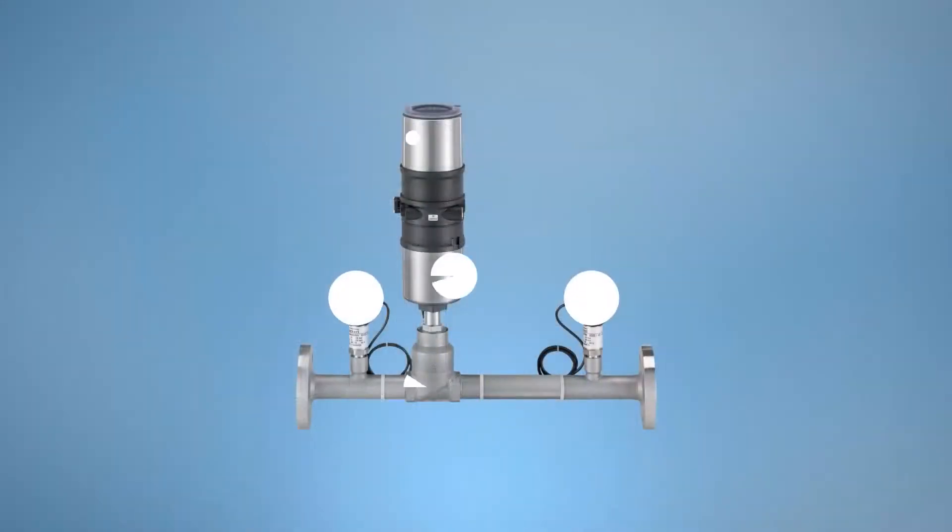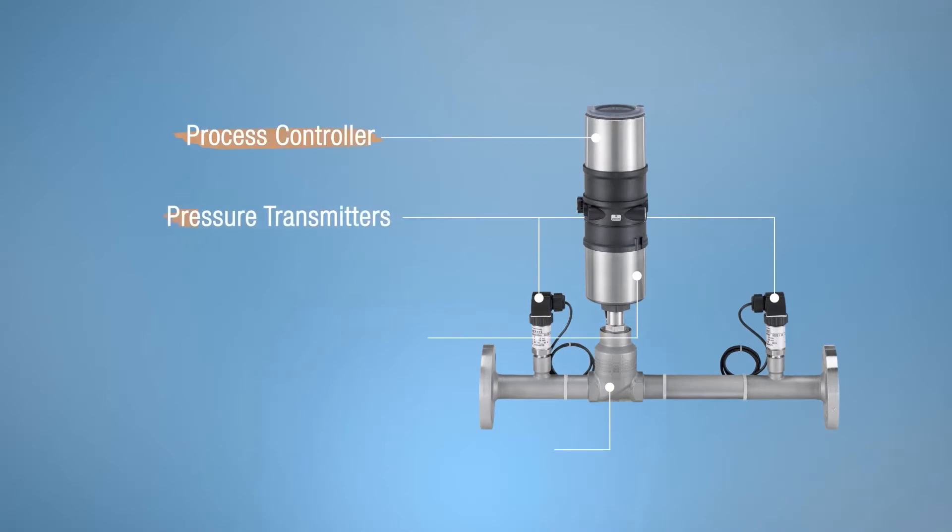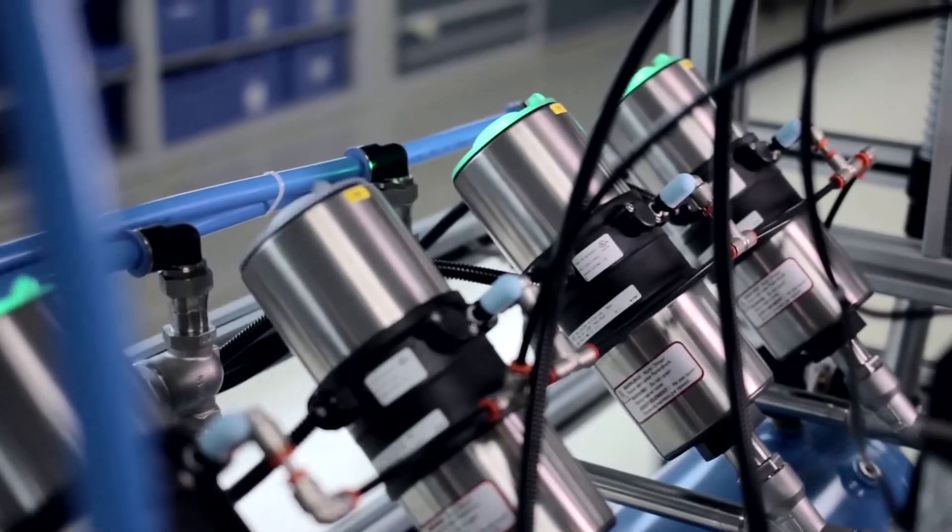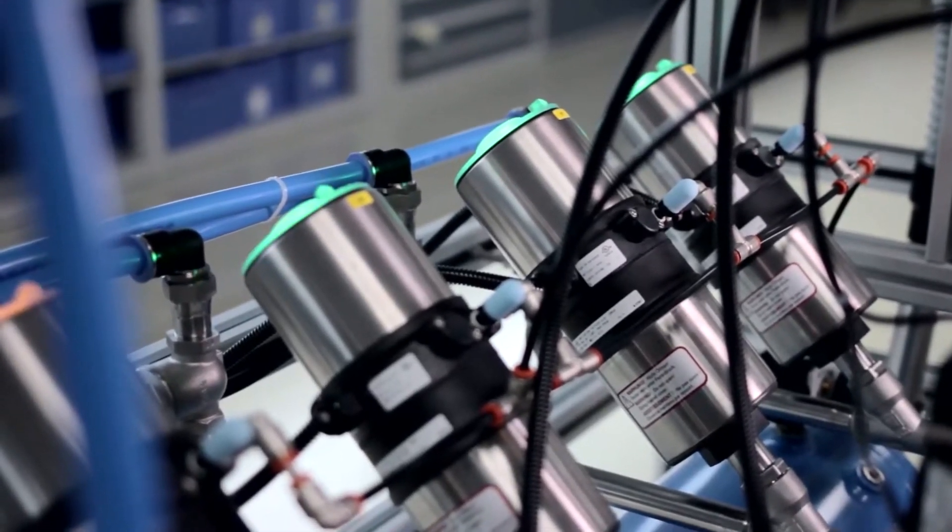The two pressure transmitters feed back the pressures before and behind the valve orifice to the controller. The controller can calculate the flow value and then if the flow value deviates from the set point, the type 8750 controller adjusts the valve automatically in order to reach the set point.